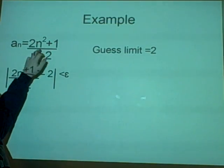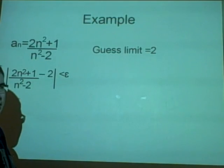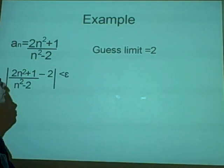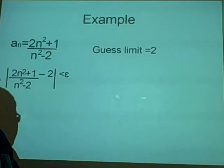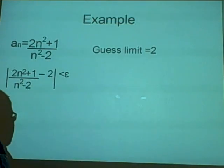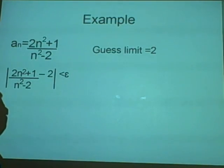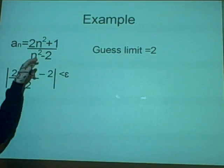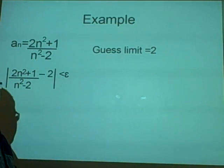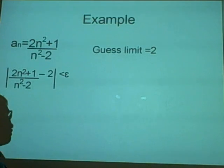Our sequence is (2n² + 1) / (n² - 2). We want to guess the limit first. The way I do this is pick a big number like 100 and compute (2×100² + 1) / (100² - 2) on the calculator, and this will give you somewhere close to 2. Most of these you can just look at them and guess. After finding our guess, we write down the inequality: this function minus 2 is less than epsilon.